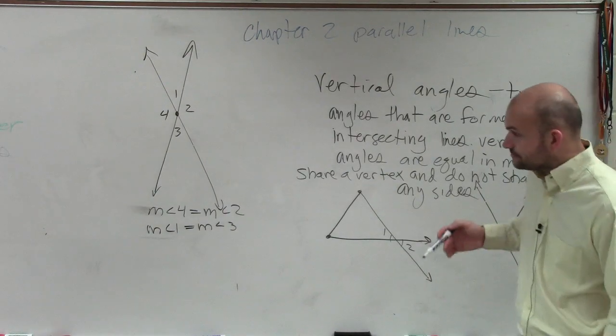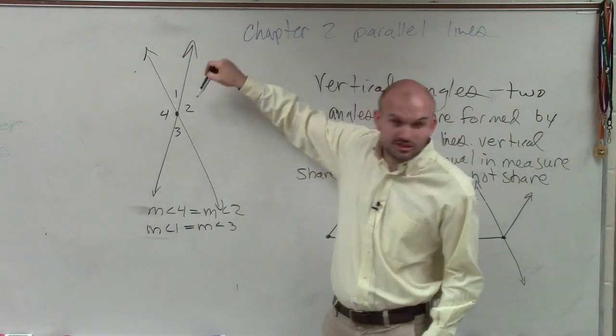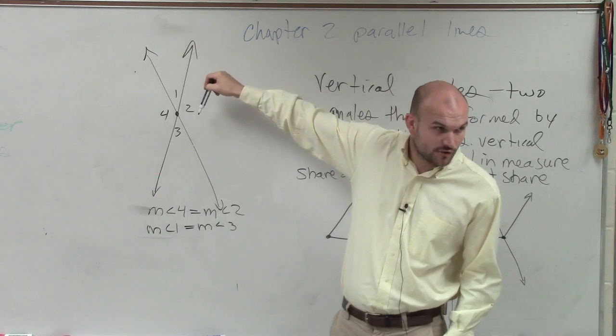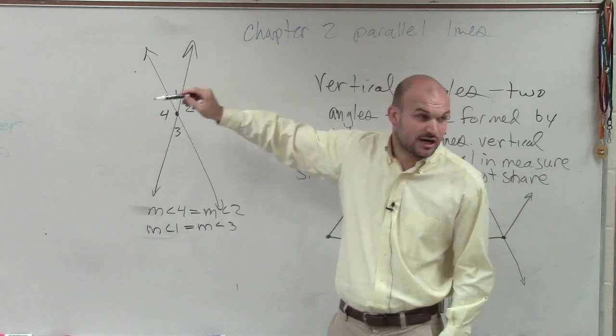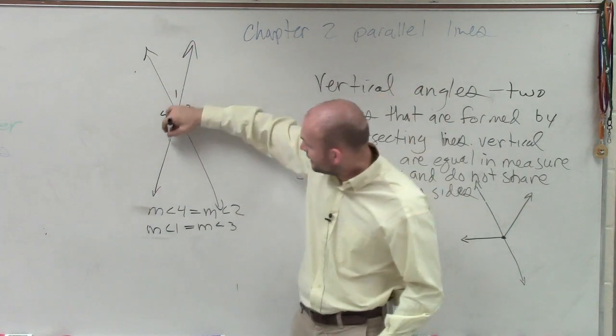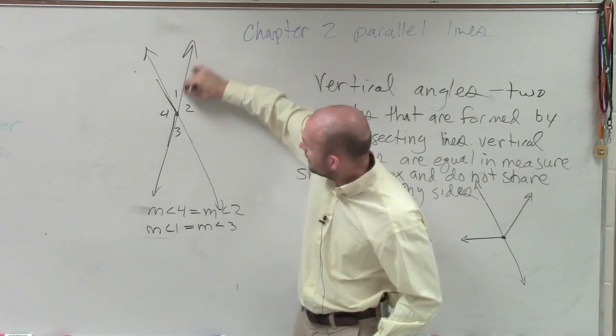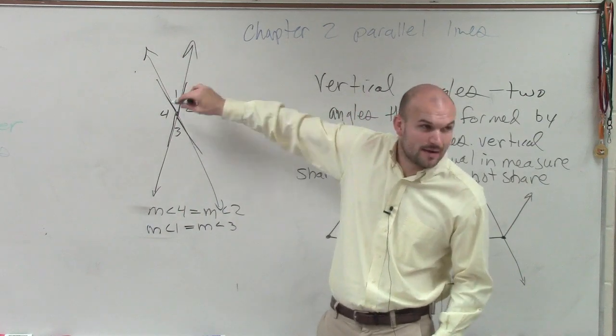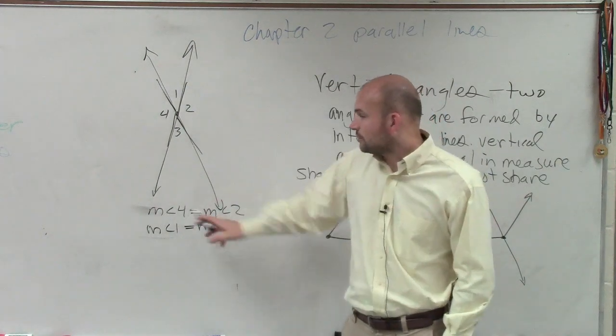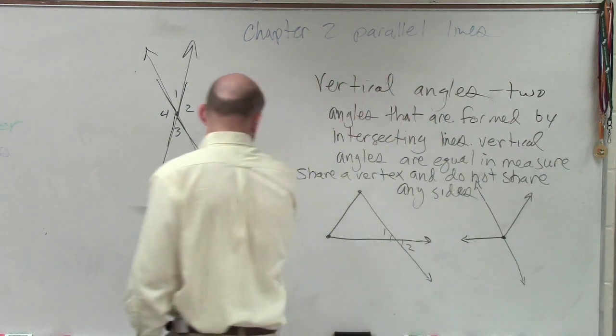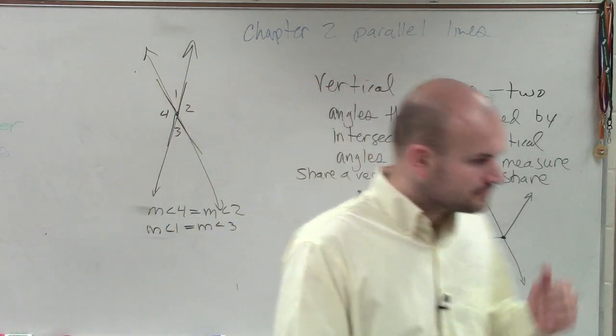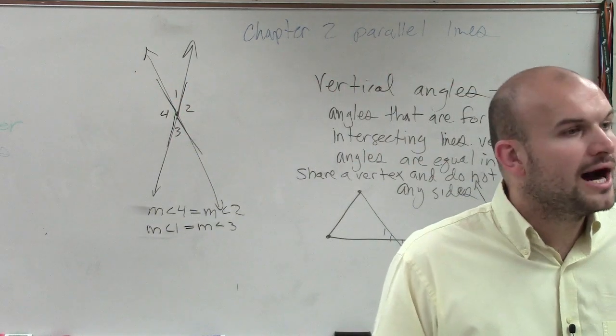So Elena, when you look at this, do the angles four and two share a vertex? Yes. Do they share any sides? No. Look at the angle. The only thing that they have in common is that point, that vertex. So therefore, those angle four and two, that's an example of vertical angles.